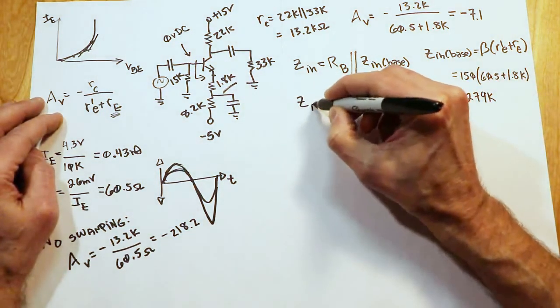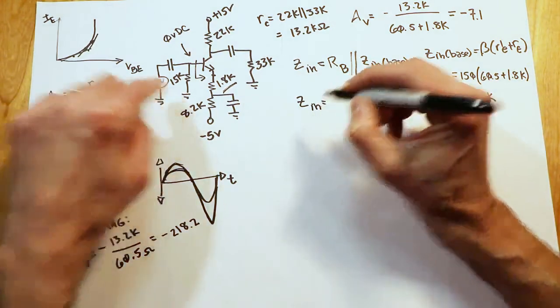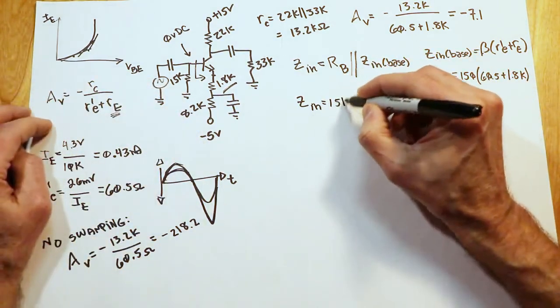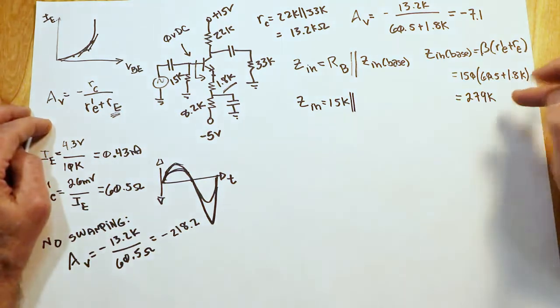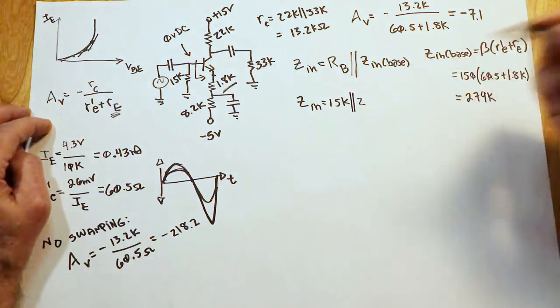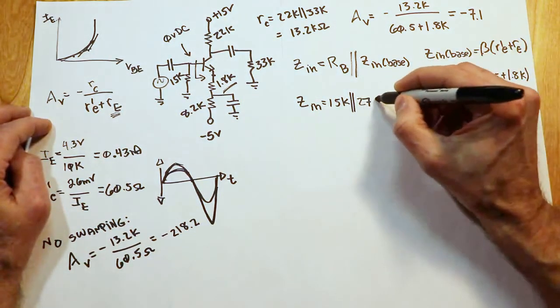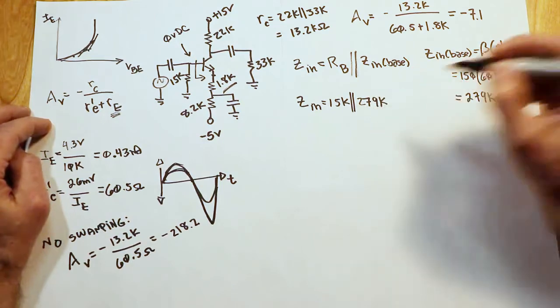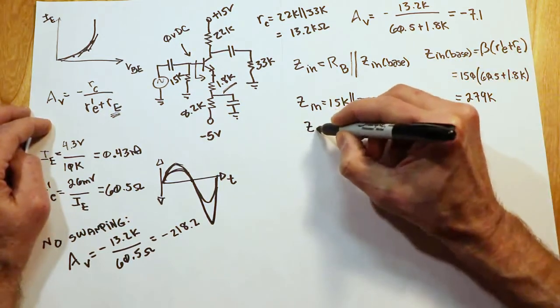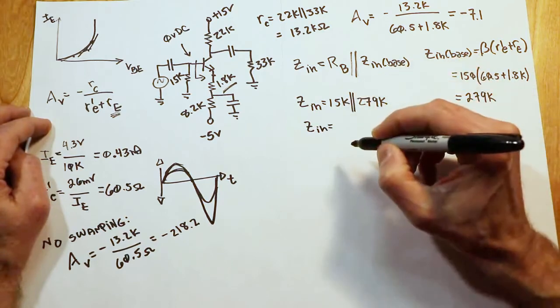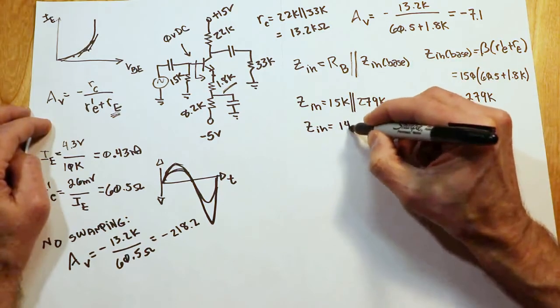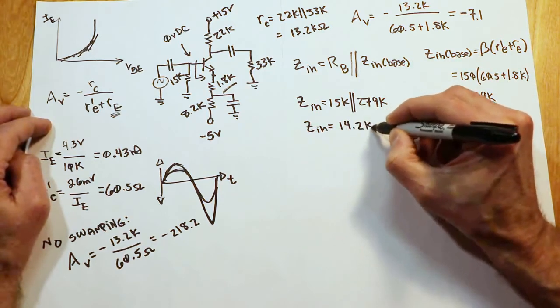So the Zn is going to wind up being this 15 K in parallel with this 279. Now, clearly the Rb is the dominant factor here. This is going to wind up being just a little bit less than 15 K, 14.2 K.